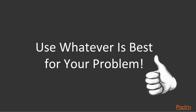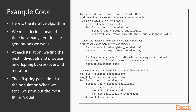There's no single right way to use a genetic algorithm. Here's some Python code that will run the GA procedure, assuming we have defined the various functions like fitness, selection, crossover, and mutate. We must decide ahead of time how many iterations or generations we want — maybe a thousand or so. At each iteration, we find the best individuals and produce offspring by crossover and mutation. The offspring get added to the population, and when we stop, we just print out whatever the best individual is that we have.